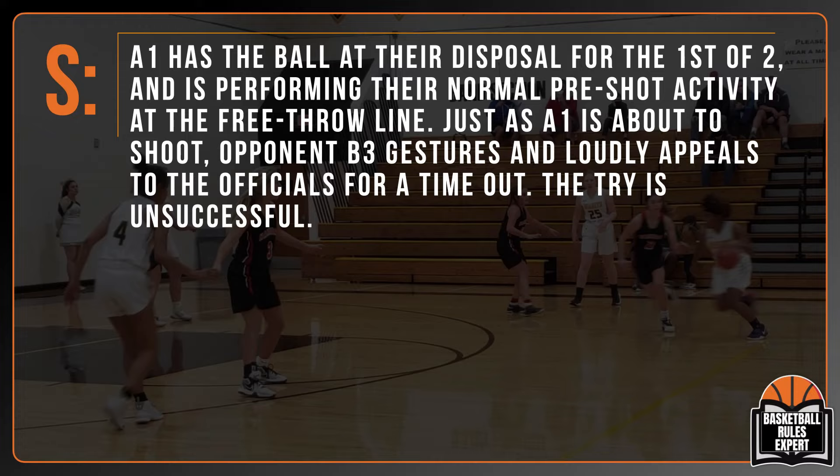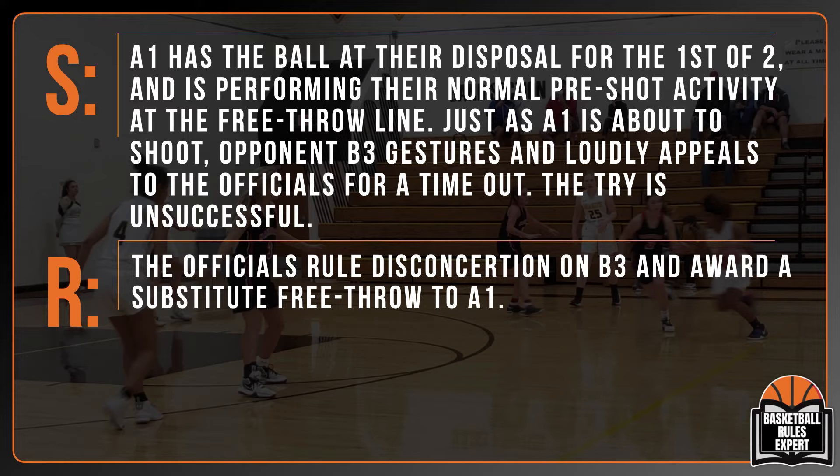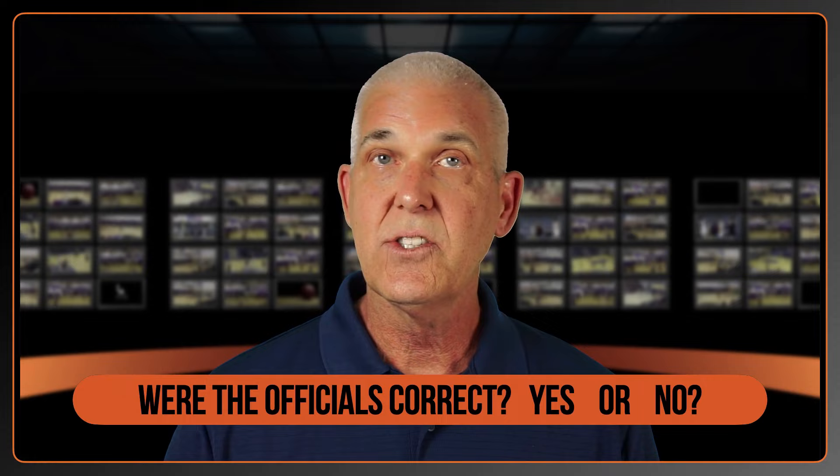Scenario 5: A1 has the ball at their disposal for the first of two free throws and is performing their normal pre-shot activity. Just as A1 is about to shoot, opponent B3 gestures and loudly appeals to the official for a timeout. The try is unsuccessful. The officials rule disconcertion on B3 and award a substitute free throw to A1. Were the officials correct?